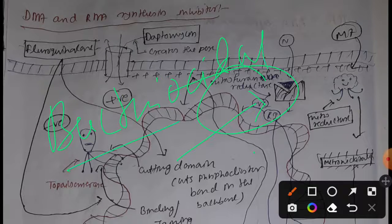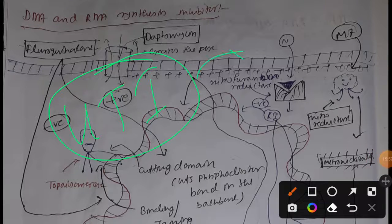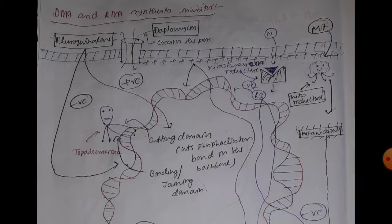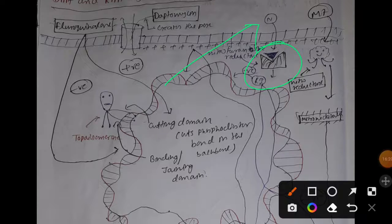Because it stops the synthesis of DNA, RNA, and protein, nitrofurantoin is 100% bactericidal. It is used against both gram-positive and gram-negative bacteria, and it is mainly used to treat UTI (urinary tract infections) caused by various bacteria, for example E. coli and Enterococci.